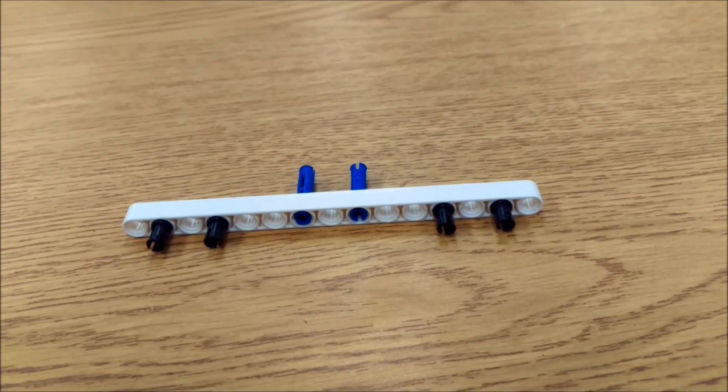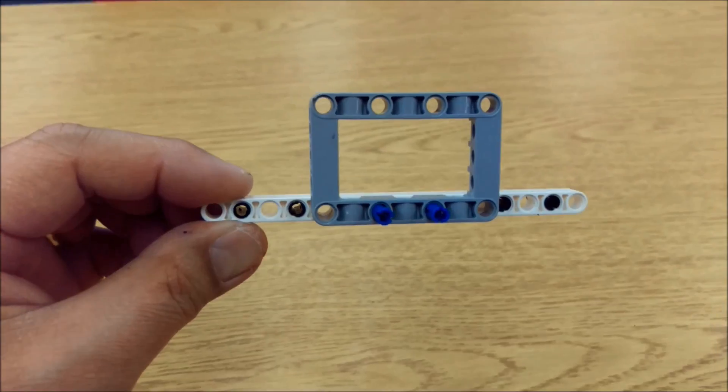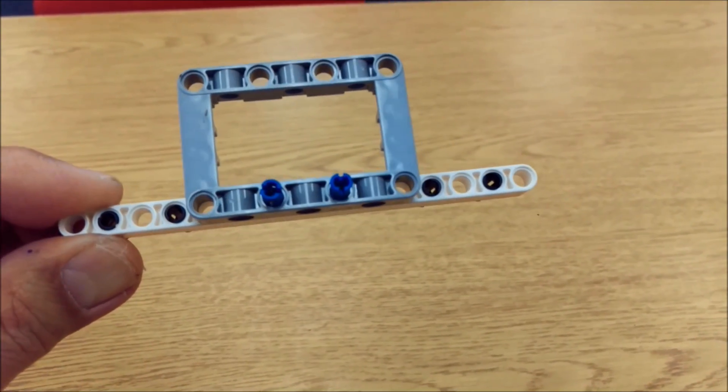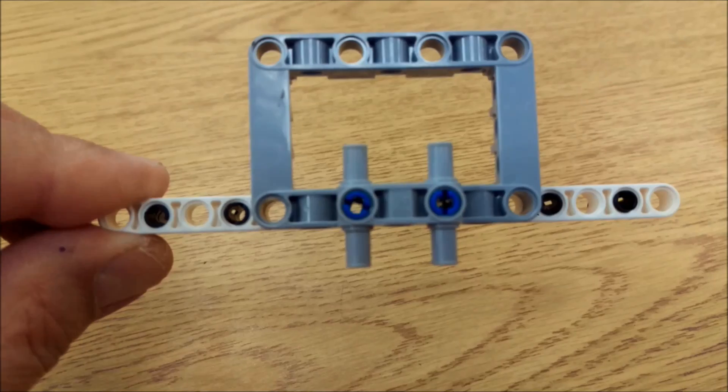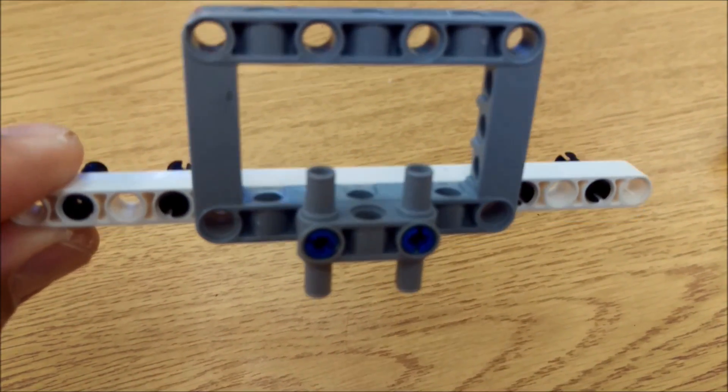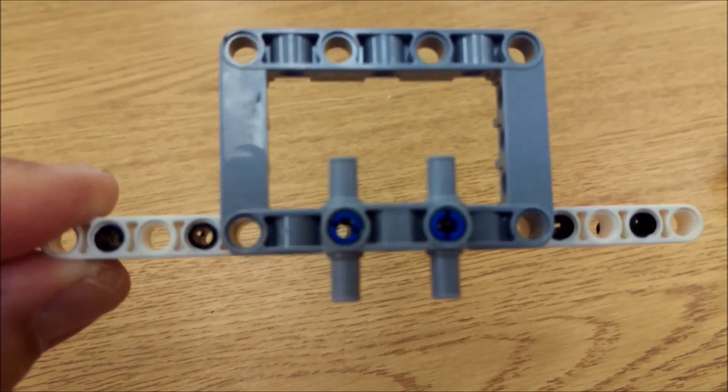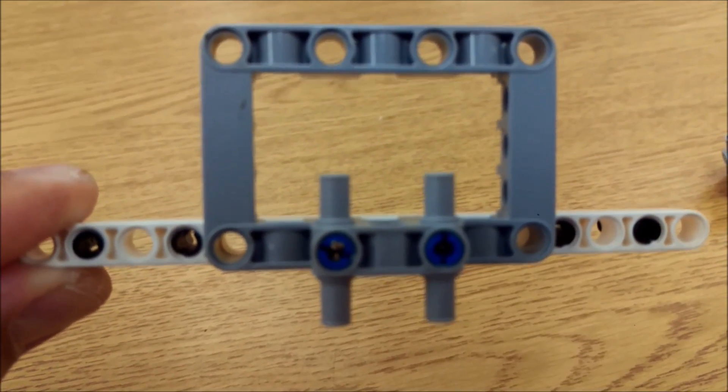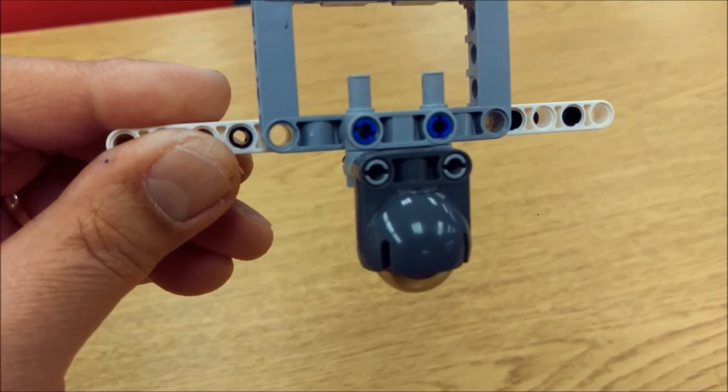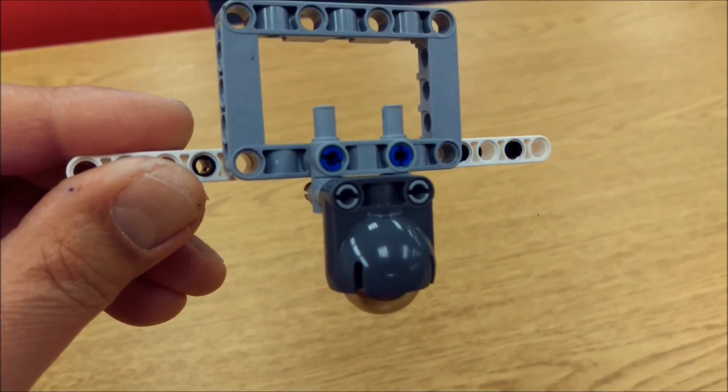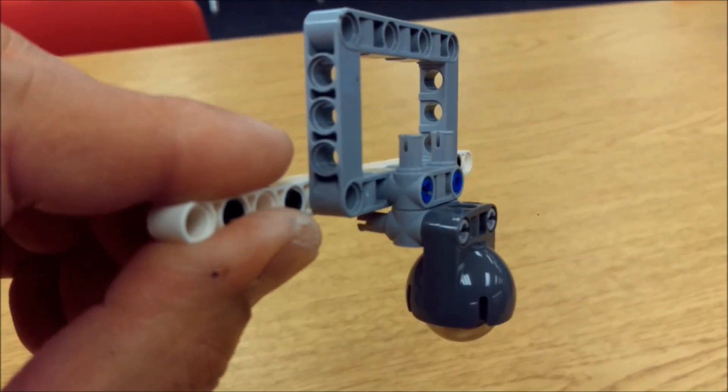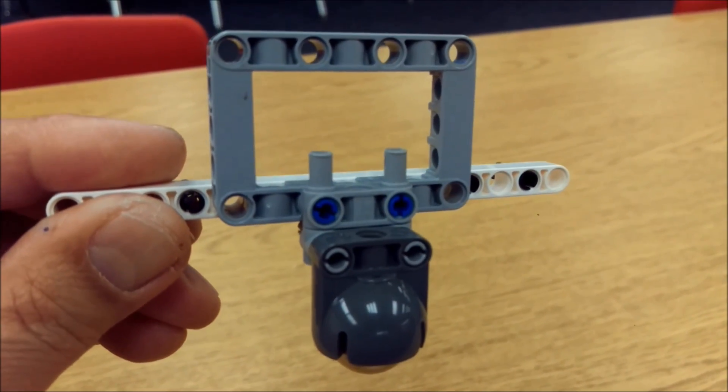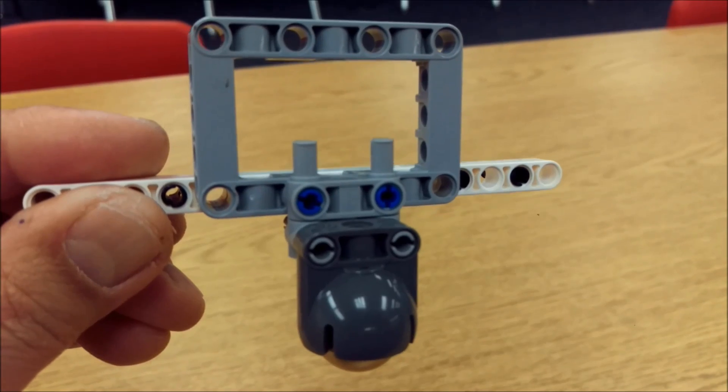Now let's go ahead and put the square and the ball caster on it. We'll put this gray square on like so. Next we'll put this gray H connector on to the blue connectors like that. And then lastly we'll put our ball and caster on to the gray connector like that. All right let's go ahead and attach this on to the robot.